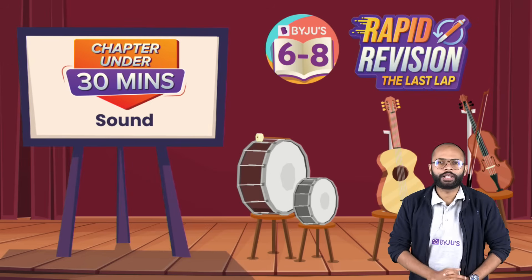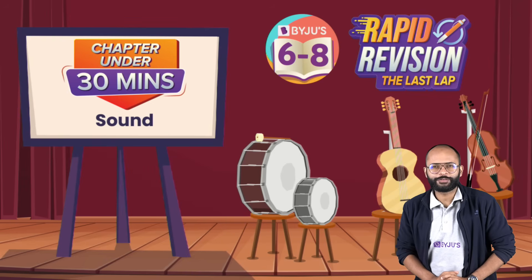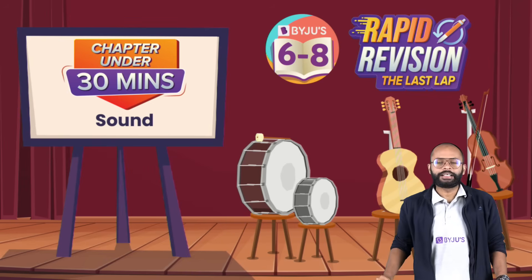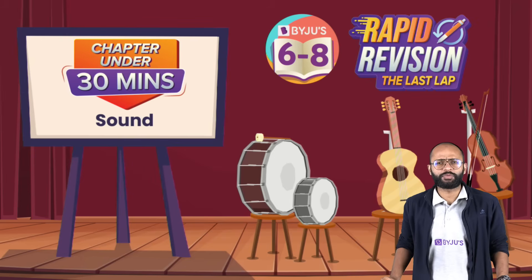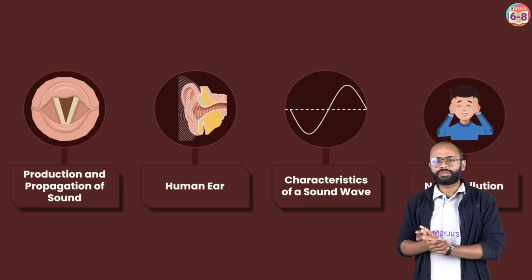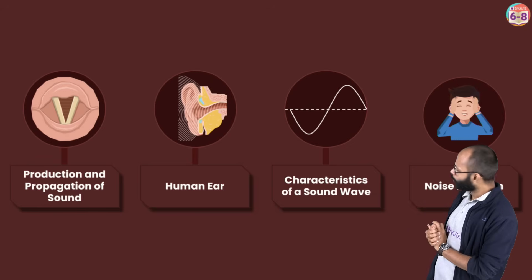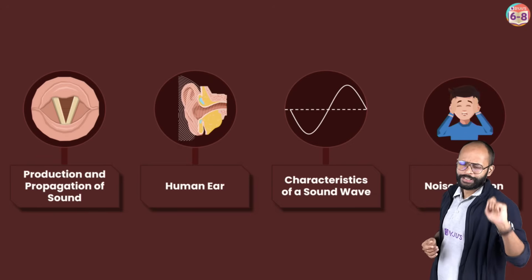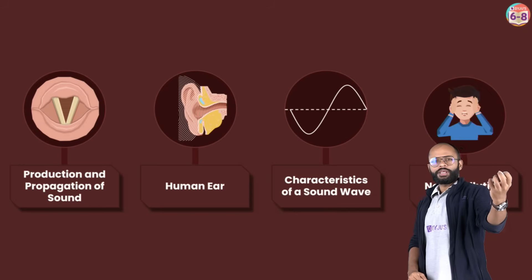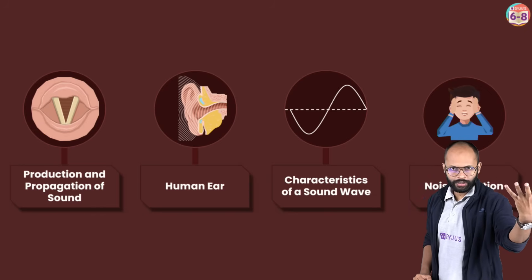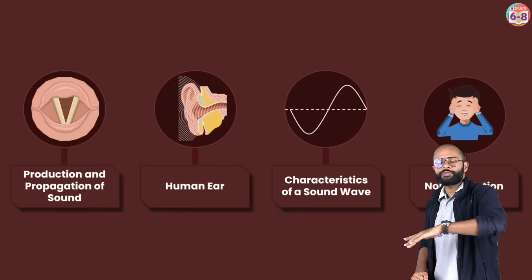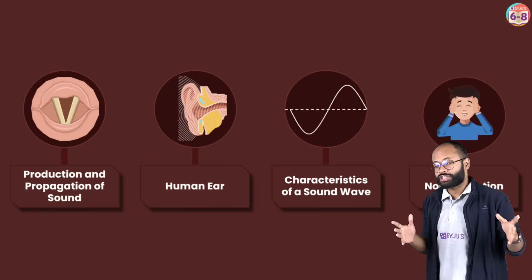Shall we start? Don't forget to press the like button. Let's begin. Broadly, we can say this chapter is divided into four parts. First is production and propagation of sound — something is going to produce the sound, then sound is going to travel, and that traveling is what we call propagation.